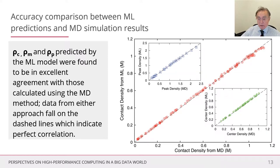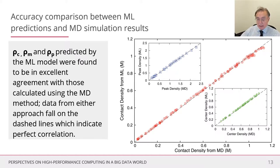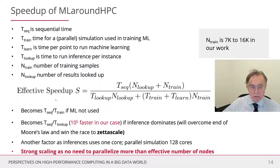For further illustration of success: once you have the surrogates, you can calculate values for any inputs and draw trend lines. Plotting peak density from the surrogate against the original molecular dynamics results in a scatter plot that aligns totally along y = x, illustrating the huge reliability of this method.